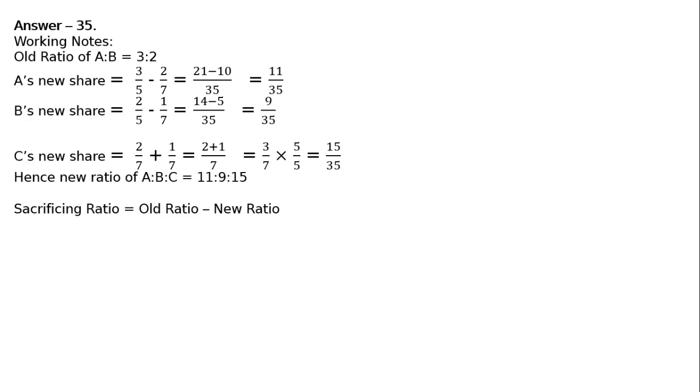Sacrificing ratio equals old ratio minus new ratio. A's sacrifice: old share 3/5 minus new share 11/35. LCM is 35. 21 minus 11 equals 10/35.